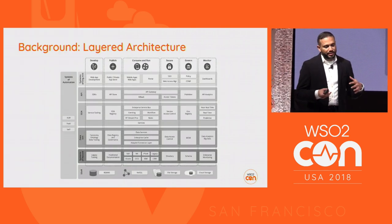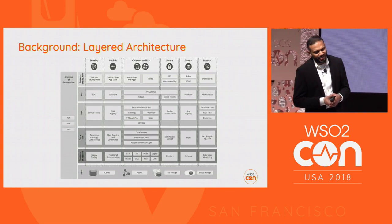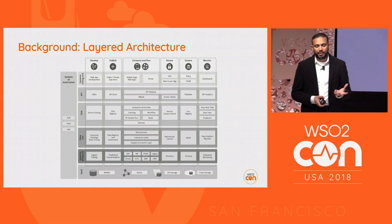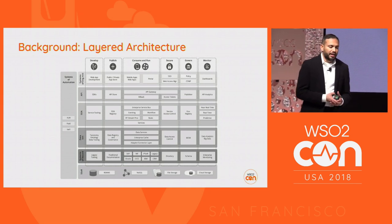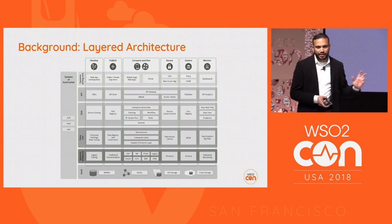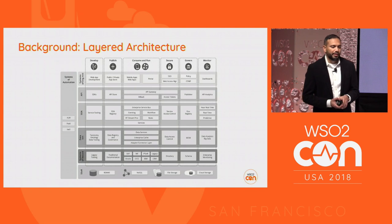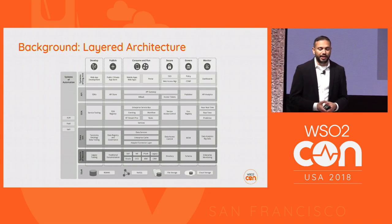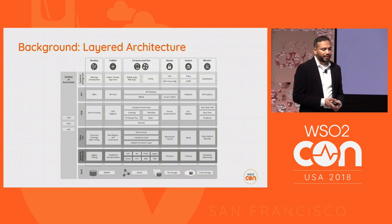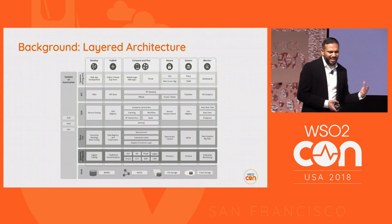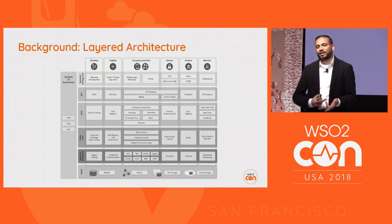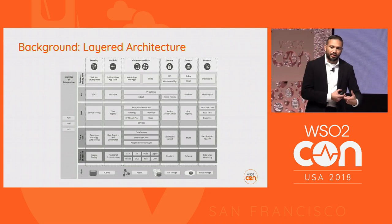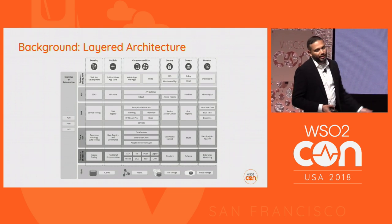To set some background, this is a layered architecture we published about four years back, considering middleware needs and service-oriented architecture principles. In a layered architecture, data flows from layer to layer, and as Tyler and Paul explained yesterday, each middleware layer is owned and managed by a specific team. Architecture evolved from single-tier to two-tier, three-tier, MVC, and then N-tier — all following the layered architecture pattern.